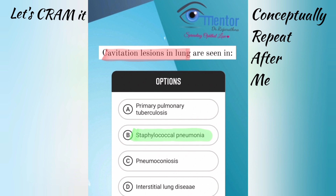Cavitation is characteristic of Staph aureus. Cavitation is a thick-walled cavity. Thin-walled cavities with fluid levels are called pneumatoceles, also characteristically seen in Staph aureus. Now, cavitatory lesion is seen only in post-primary or secondary tuberculosis. The option says primary tuberculosis, so that is not the answer.